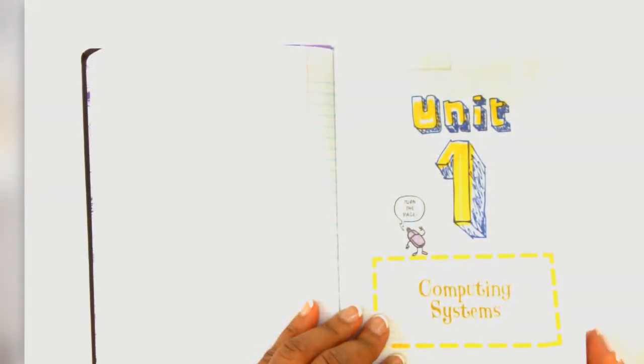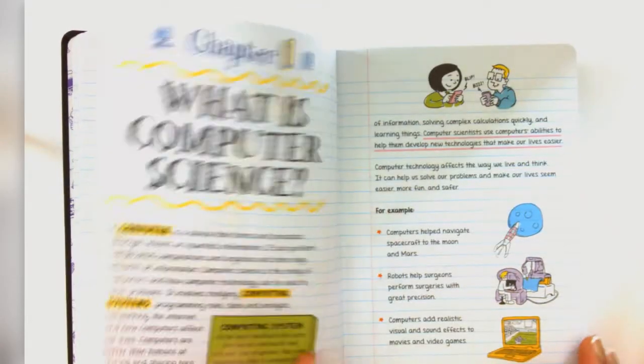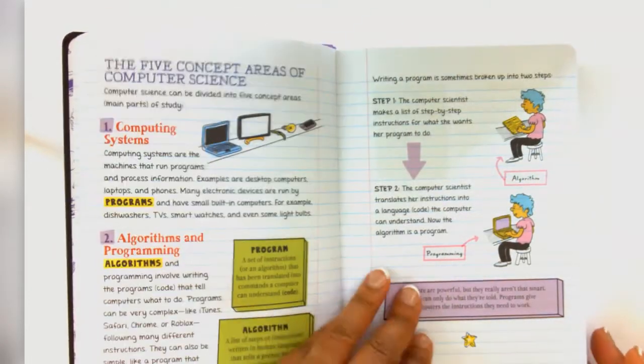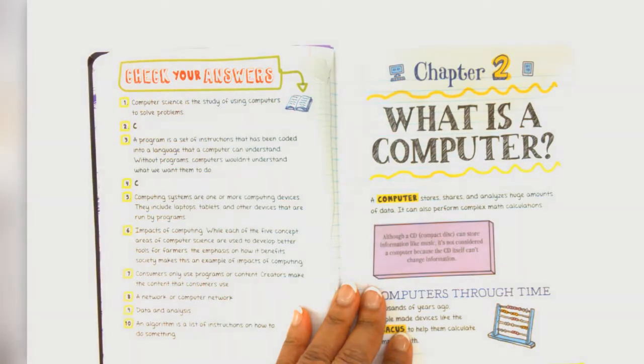So this book is set up in the same way as the previous book that I've reviewed. You will have units and then in each unit there are chapters. At the end of each chapter there is a check your knowledge. On the back of the check your knowledge is the check your answers.